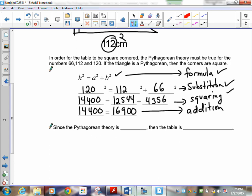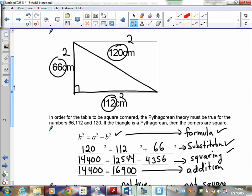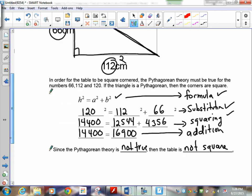Since the Pythagorean theorem is not true, then the table is not square. We know that from this triangle, if this was a square table, that this length here should be the square root of 16,900, not the square root of 14,400. So there's a simple way of working with the formulas.